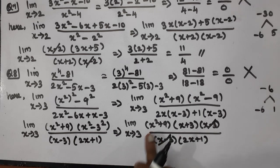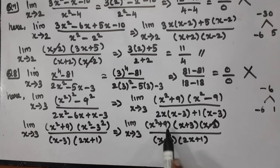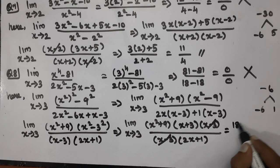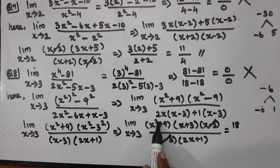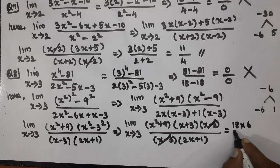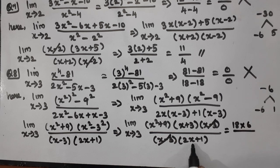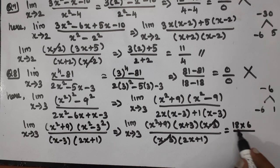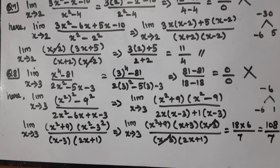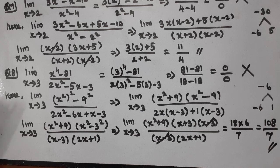Cancel x minus 3 from numerator and denominator. Now substitute x=3: 3 squared plus 9 is 9 plus 9 equals 18. 3 plus 3 is 6. 2 into 3 is 6 plus 1 is 7. So 18 into 6 divided by 7 equals 108 by 7. This is the answer for Question number 8.